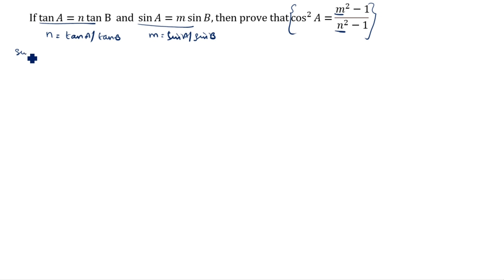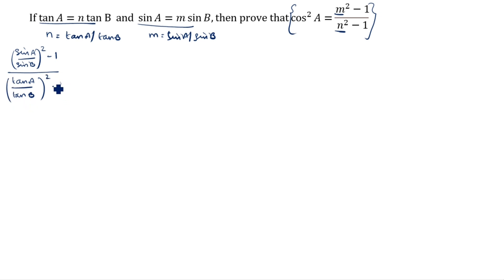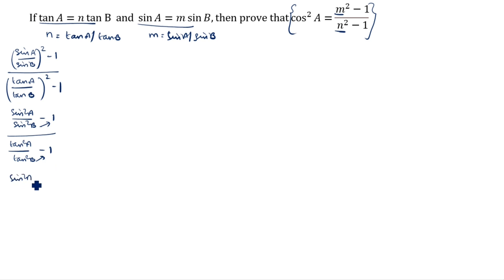Substituting: m squared is (sin a / sin b) whole square minus 1, divided by n squared which is (tan a / tan b) whole square minus 1. Removing the bracket gives sin square a divided by sin square b minus 1, divided by tan square a divided by tan square b minus 1. We will cross-multiply.